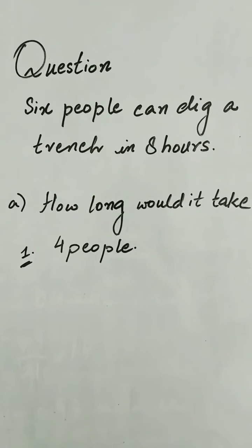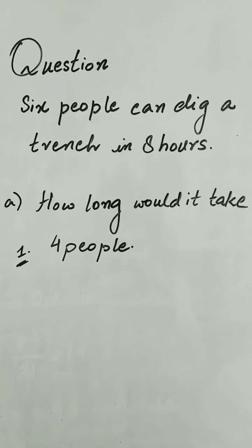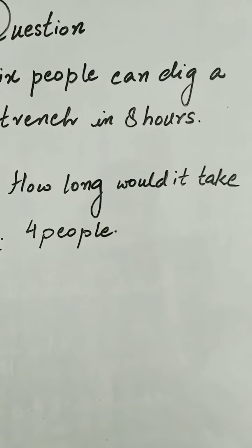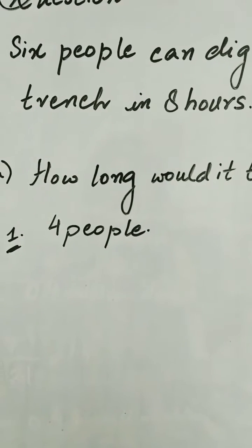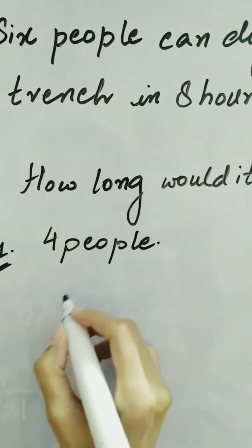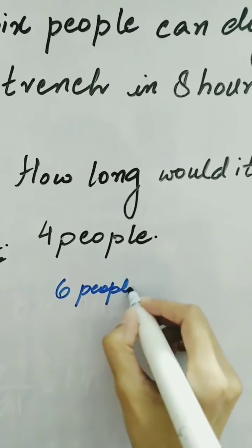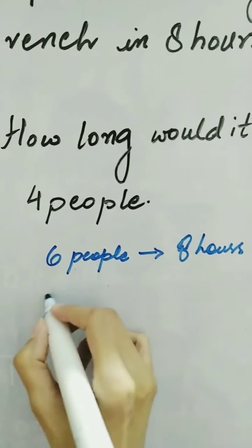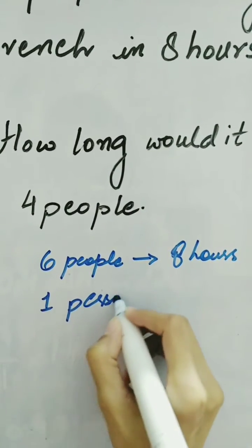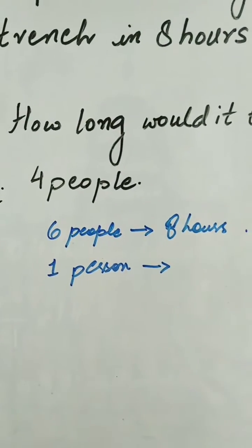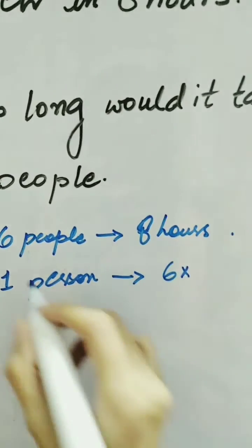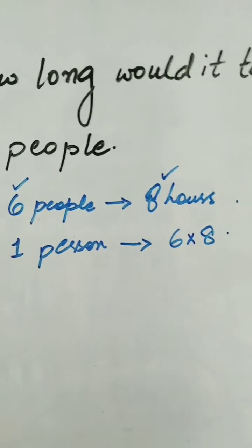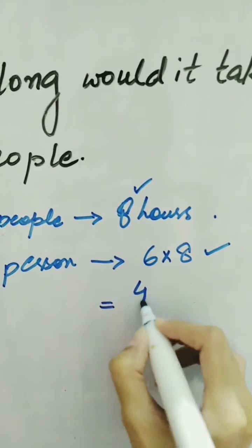Here we have another question: 6 people can dig a trench in 8 hours. How long would it take with 4 people? We will solve this step by step. Since 6 people do the work in 8 hours, if one person does the same work, they have to work more hours. So we multiply 6 by 8, because one person has to perform the task of all 6, meaning the hours increase. That gives us 48 hours.